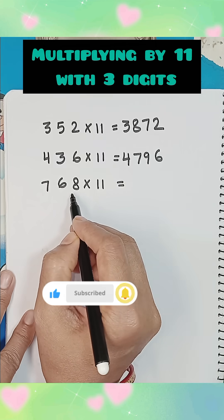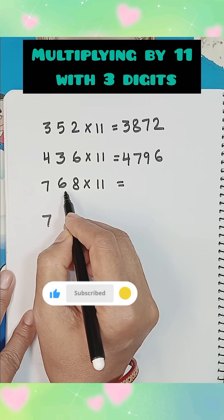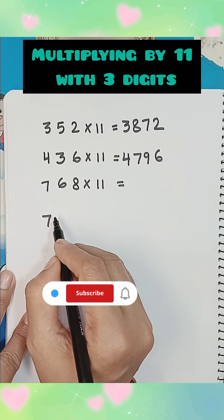Now multiply 768 by 11, write 1st digit, add 1st and 2nd digit, 7 plus 6 is equal to 13.